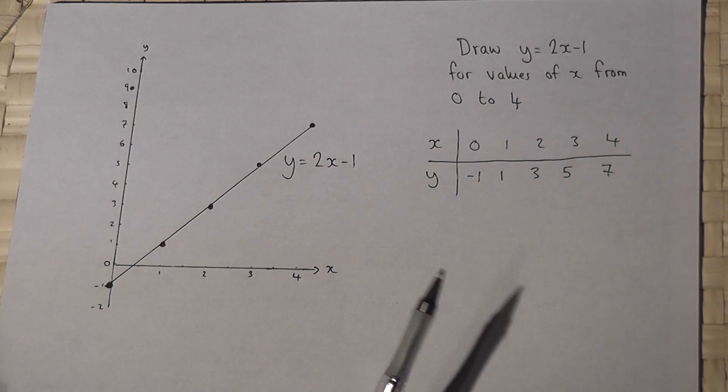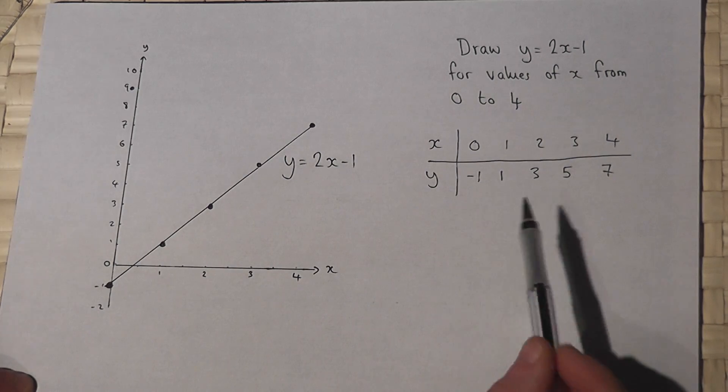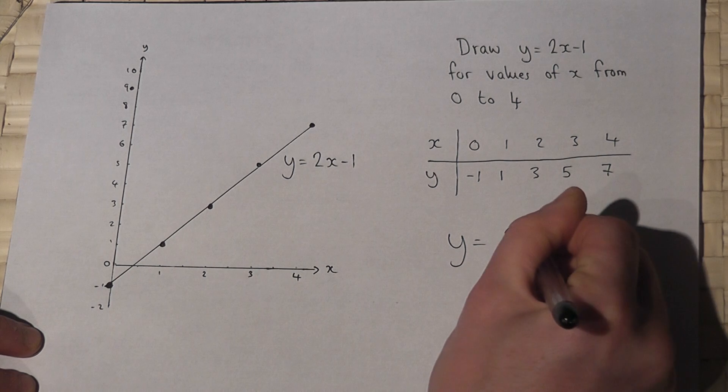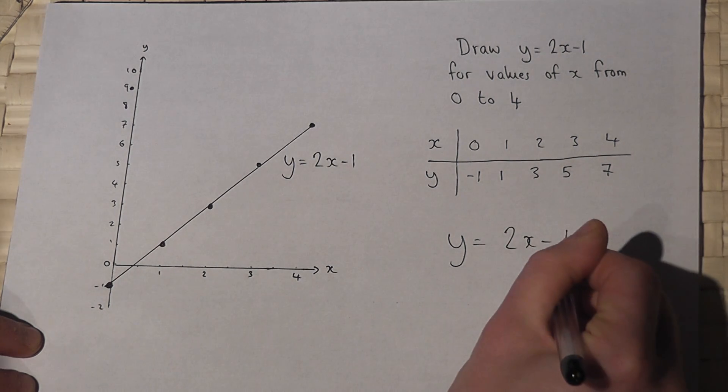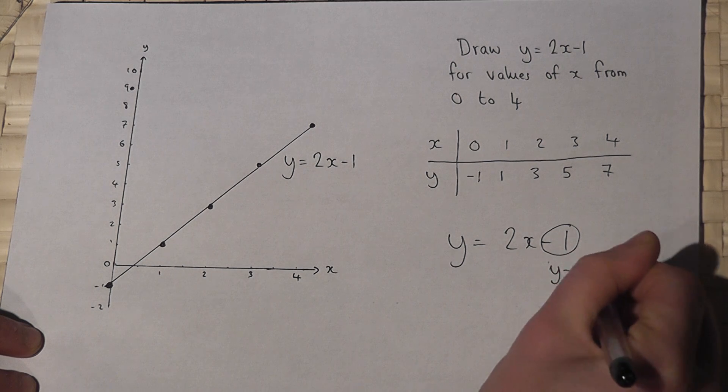Now, there is another way of doing this which does not involve a table of coordinates. Now then, if you've got an equation, then the number you add or subtract is always the y-intercept.